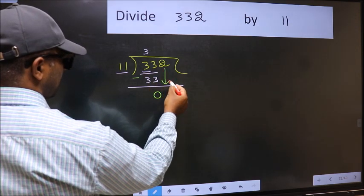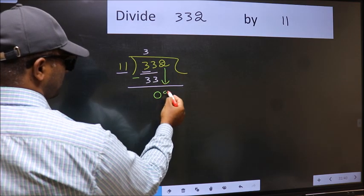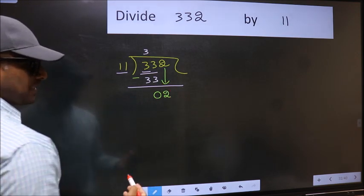After this, bring down the beside number. So 2 down. After this step, the mistake happens.